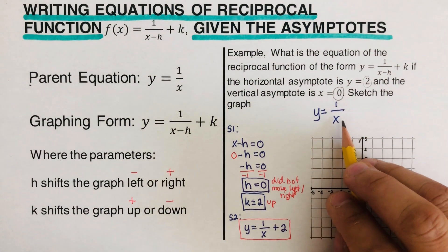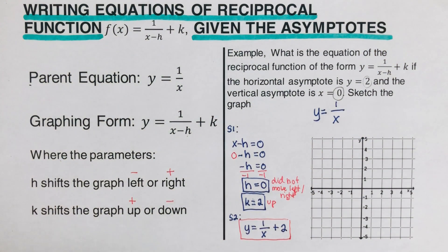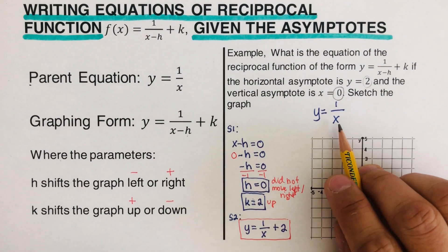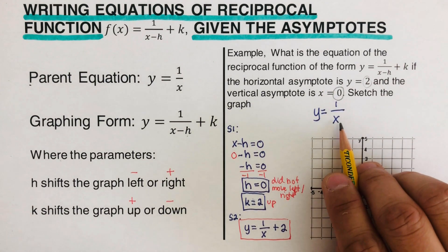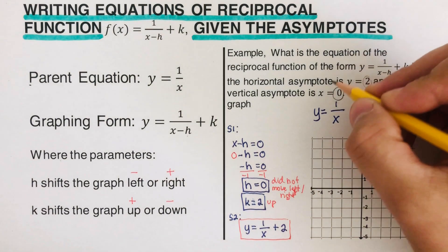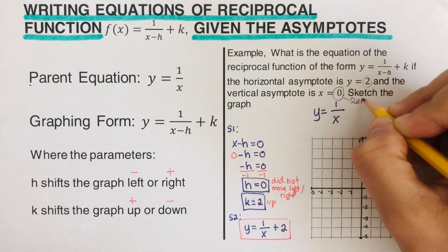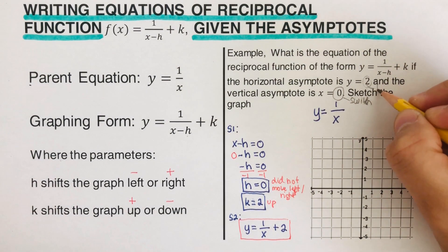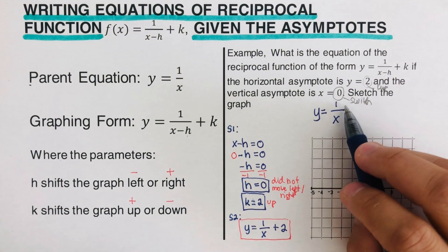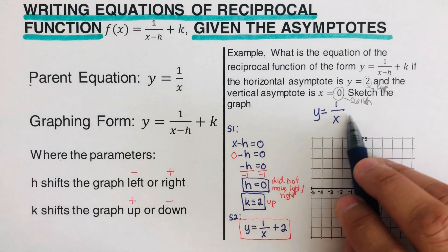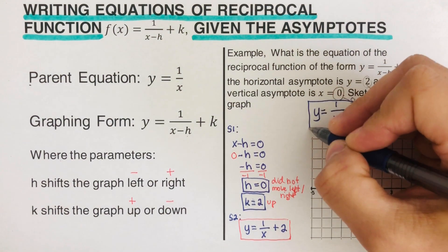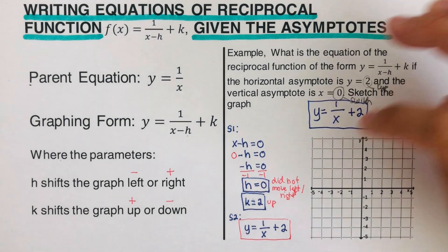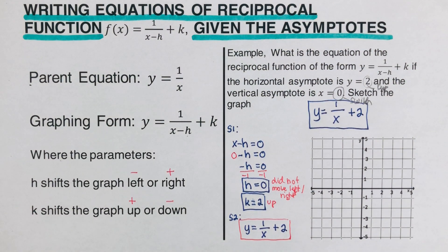Here's the fastest trick: write y = 1/x, then switch the sign of the vertical asymptote value for the denominator, and keep the horizontal asymptote value as-is. Since the vertical asymptote is x = 0, and zero is neutral, we don't need to write it. We keep the 2, giving us y = 1/x + 2.